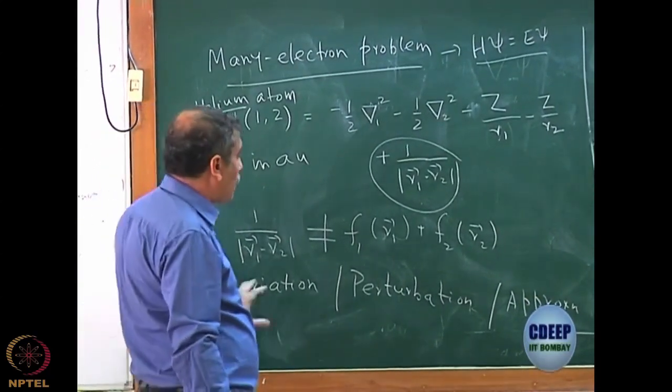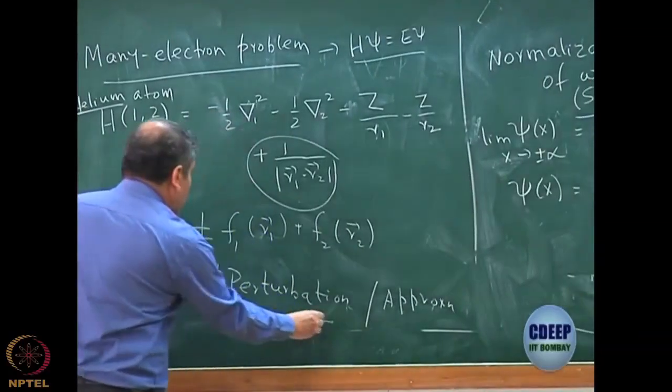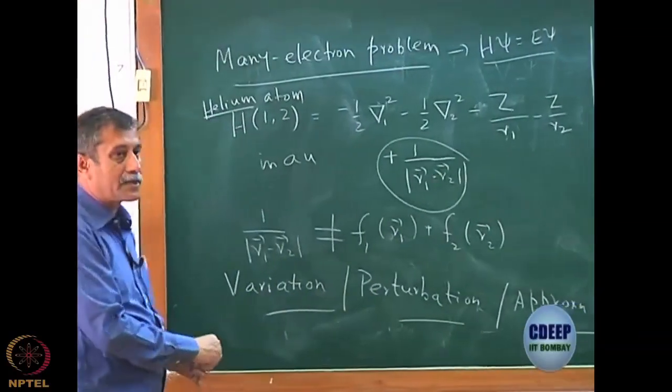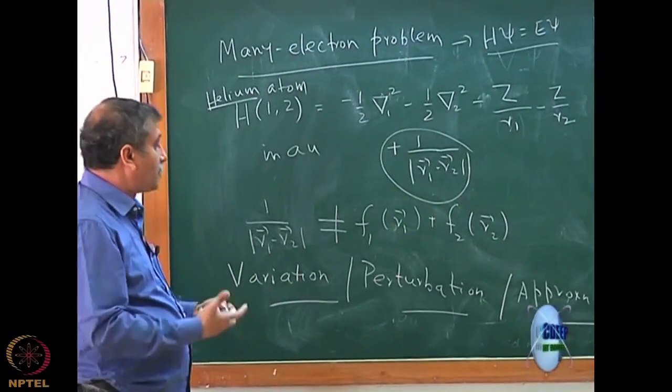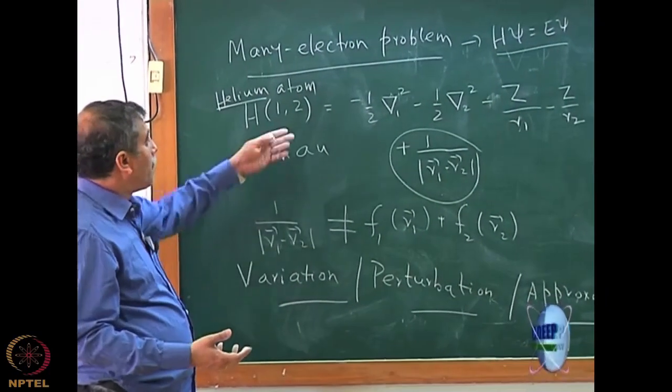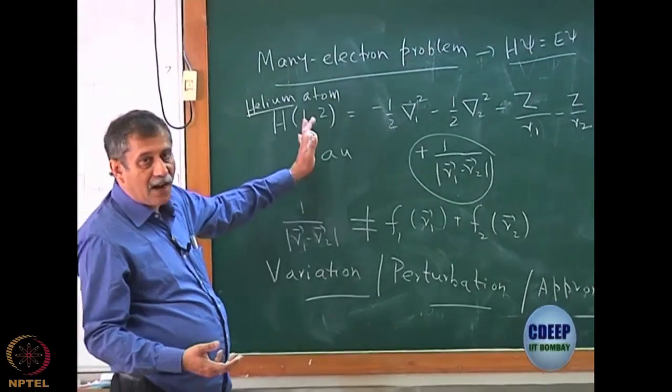We have to resort to approximate methods, and the two approximate methods that we discussed were variation and perturbation. We have to see how to integrate each of these approximate methods to make solutions from this. This is where we will start.